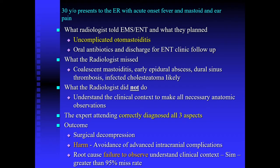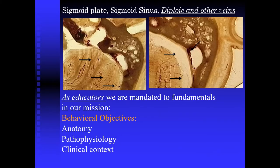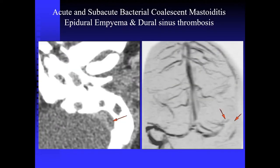Observational error alone accounts for about 80% of errors, and it also contributes to interpretive error. Why didn't this resident provide the right information? The resident didn't understand anatomy and pathophysiology. As educators, we're mandated to deliver those fundamentals. Our behavioral objectives in radiology for each clinical scenario are to teach the related anatomy, pathophysiology, and put that in a clinical context. I would submit that we don't have a system that does that in a definitive, curriculum-based, methodical manner.